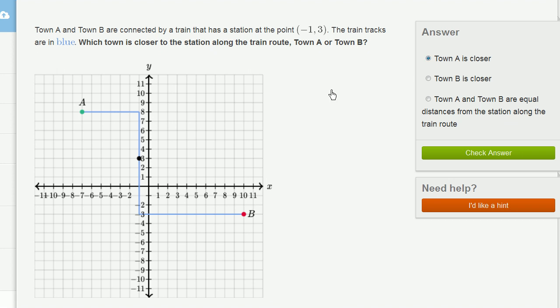Now, you could also think about it in terms of coordinates. Because A is at the coordinate negative 7 comma 8. And if you were to think about negative 7 comma 8, to get from negative 7 to negative 1 along the x coordinates, you're going to go 6. And then to go from 8 to 3, you're going to go 5 more. So you could also not necessarily count it out. You can actually just think about the coordinates. But either way, you see that town A is closer.